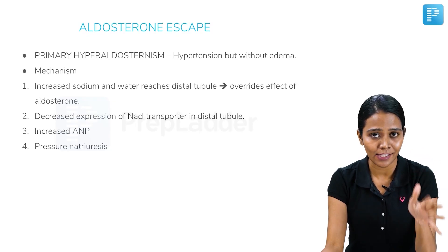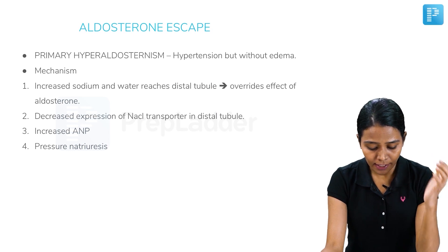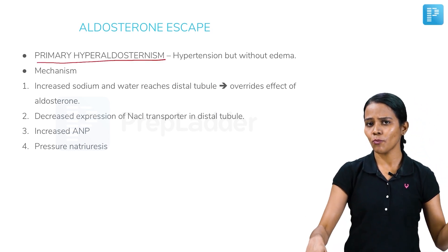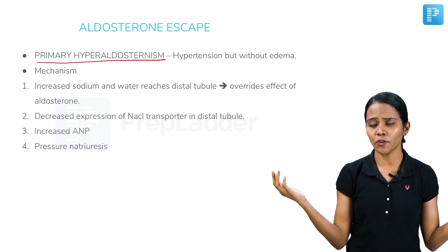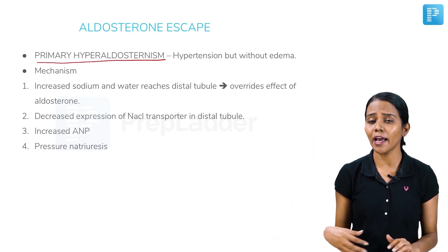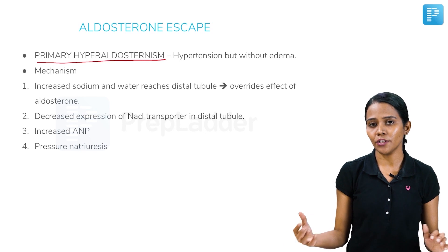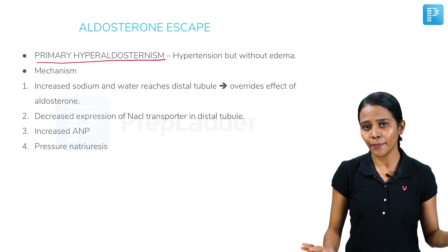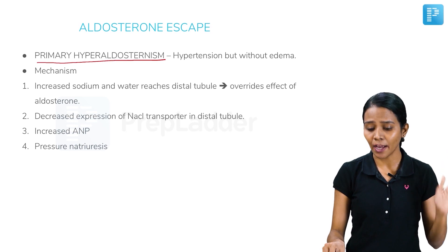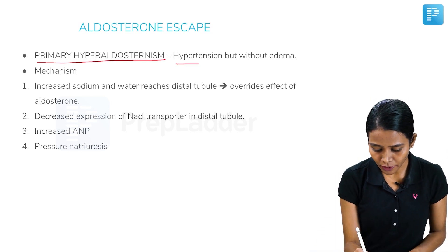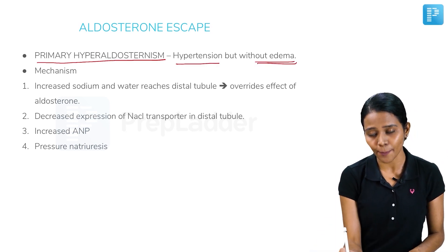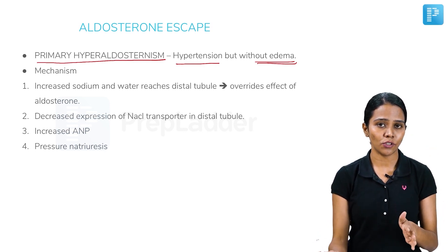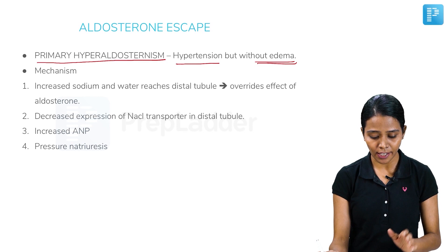There is a concept called aldosterone escape. There is a condition called primary hyperaldosteronism. Remember that aldosterone leads to reabsorption of sodium and hence a lot of water, resulting in fluid accumulation. But in primary hyperaldosteronism this does not happen. The patient can have hypertension but will not have edema. This phenomenon — hypertension without edema in primary hyperaldosteronism — is called aldosterone escape.